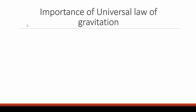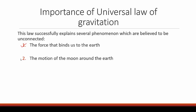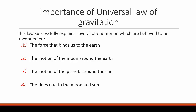The universal law of gravitation successfully explains many phenomena once thought to be unconnected. First, it explains the force that binds us to the Earth — why we walk on Earth rather than float. Second, it explains the motion of the Moon around the Earth. Third, it explains the motion of the planets around the Sun. Finally, it also explains the ocean tides caused by the Moon and Sun.